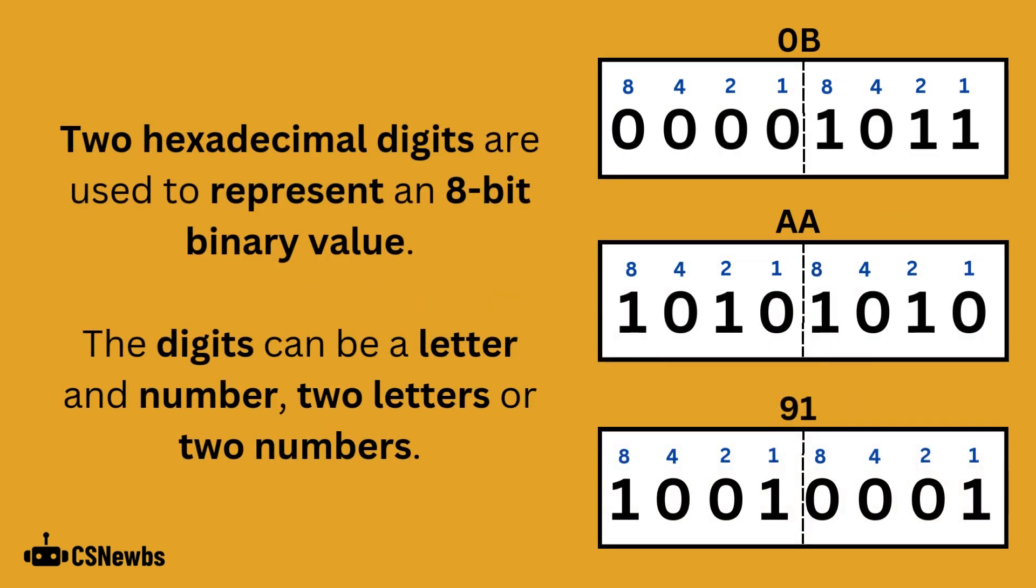Two hexadecimal digits are used to represent an 8-bit binary value. Be aware that this can be a number and a letter, a letter and a number, or two letters or two numbers like the examples here.